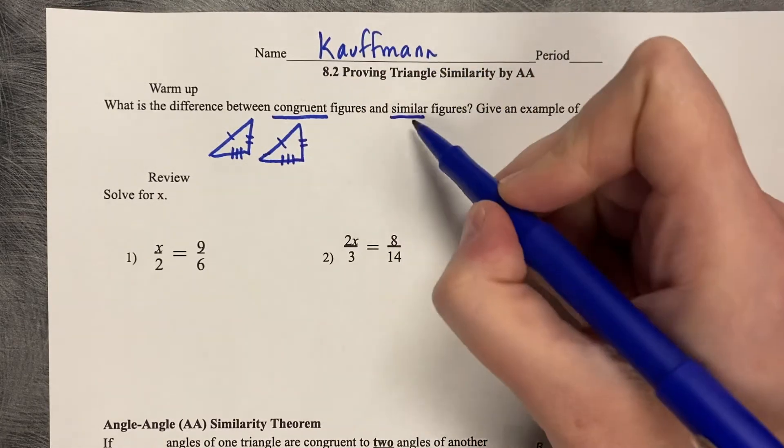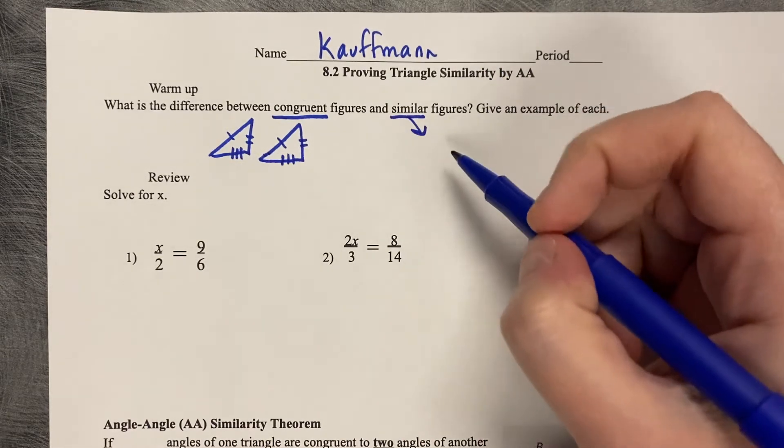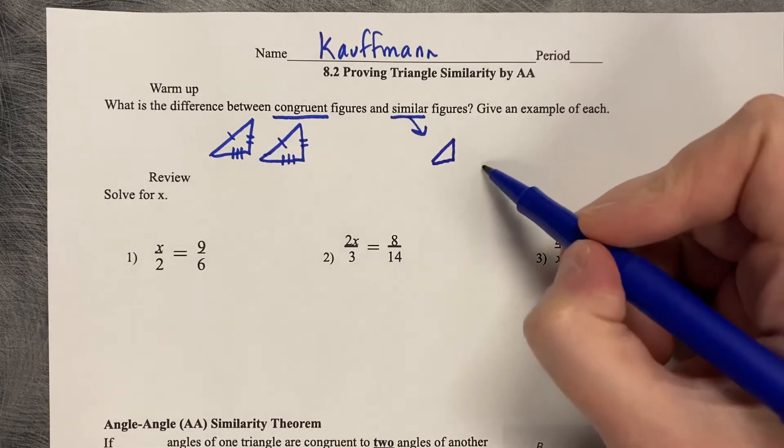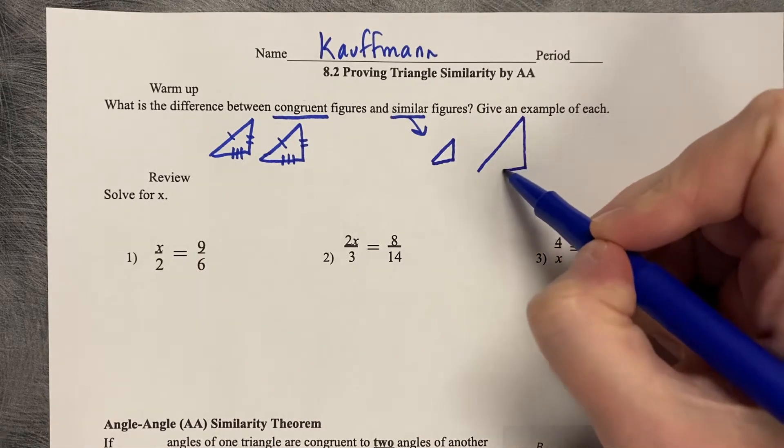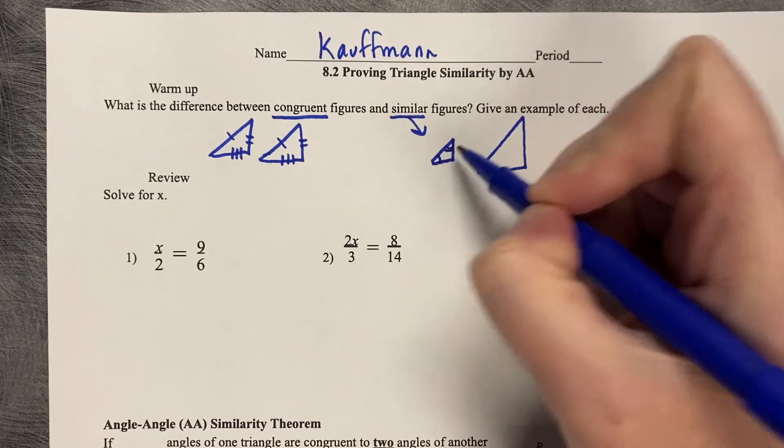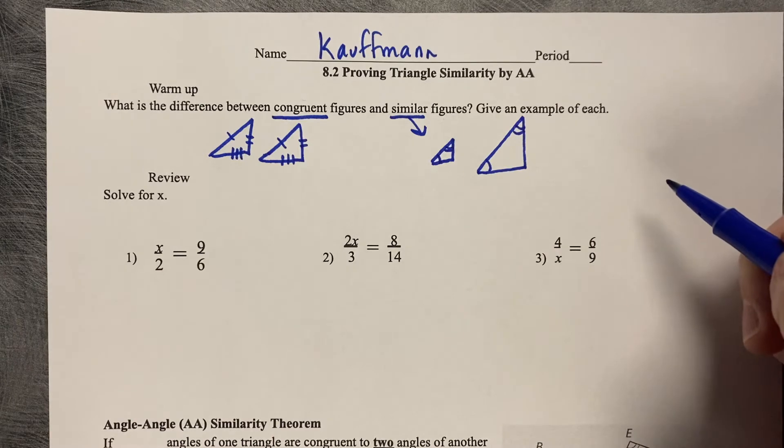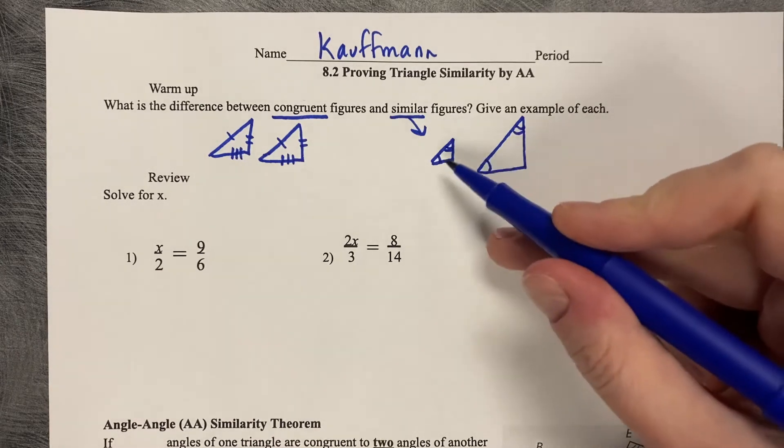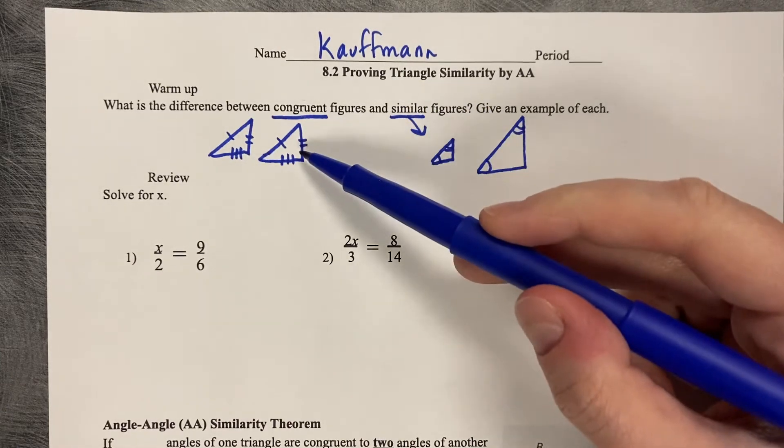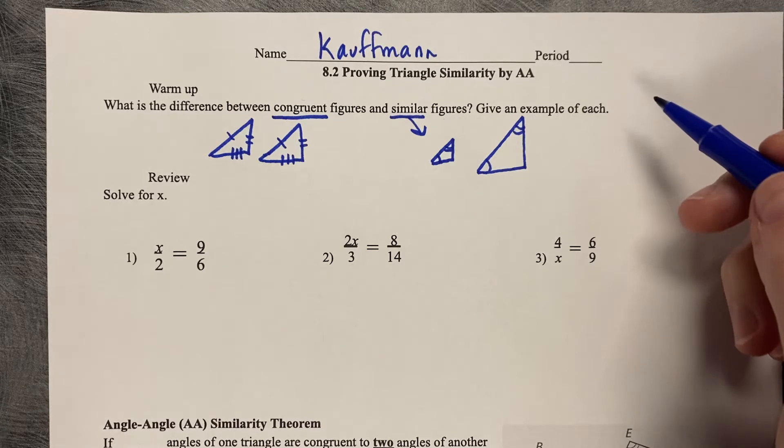Similar figures mean that they're the same shape, but one is either larger or smaller. So if I had that triangle and that triangle, they're the same shape. They've got two congruent angles, but they are not the same size. One is dilated or reduced depending on which direction you go. So congruent is exactly the same. Similar is the same shape, but not the same size.